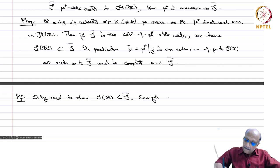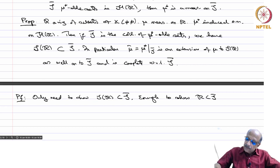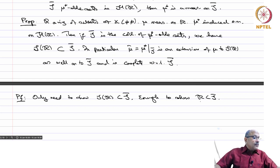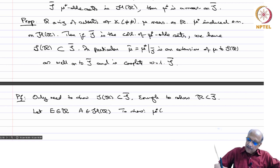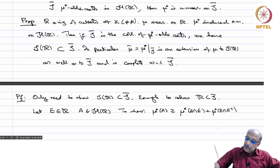It is enough to show R is contained in S-bar, because if R is contained in S-bar, and S-bar is a sigma ring, it should contain the smallest sigma ring containing R and therefore it should contain S(R) also. So let E belong to R and let A belong to H(R). We want to show that mu*(A) is greater than or equal to mu*(A ∩ E) plus mu*(A ∩ E complement) — that will show E is mu*-measurable and therefore belongs to S-bar.